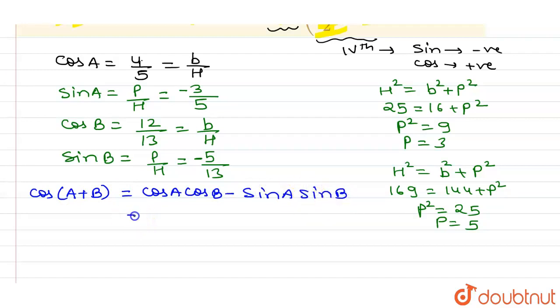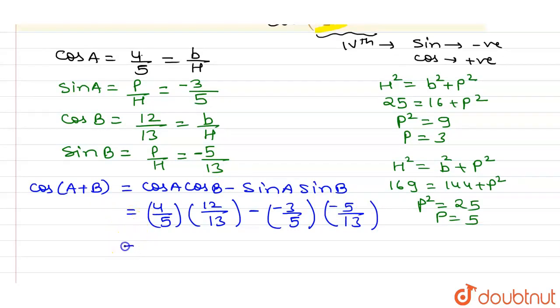Then we have to substitute these all the values, so the value of cos A is 4/5. So I can write here 4/5 into cos B, cos B is 12/13, 12/13 minus sin A, sin A is -3/5, -3/5 and sin B, sin B is -5/13, -5/13.